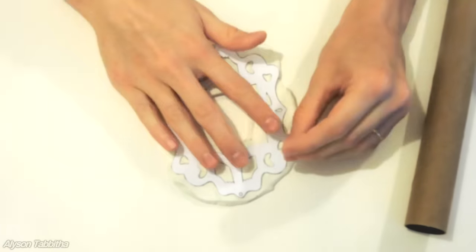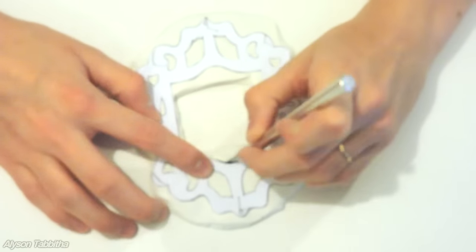Now I'm getting out my oven-baked clay and rolling it flat to about the size of the pattern, then cutting out the shape with an X-Acto knife.